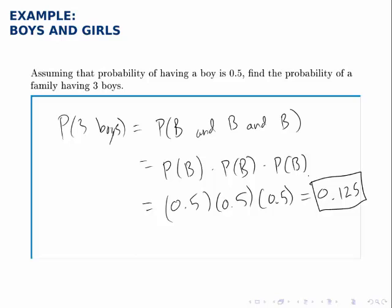Another way to do this problem is to list out the whole sample space of what could happen with three children: boy boy boy, girl girl girl, boy boy girl, and so on and so forth.